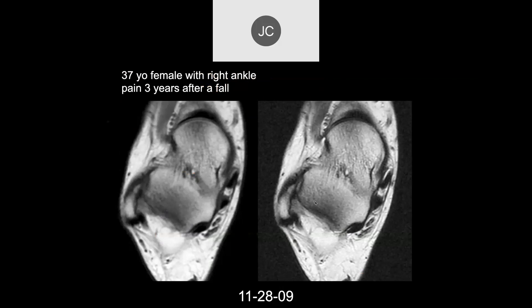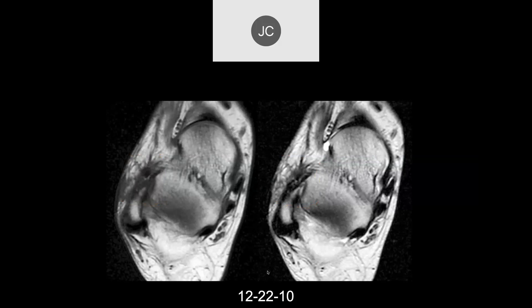Oleg, what do you think of this case? What we see is thickening of the anterior ligament with indistinctness of the margin here, and a little bit of inhomogeneous signal intensity within it. This is on 11-28-09, three years after the patient had a fall and had persistent right ankle pain. This is now on 12-22-2010.